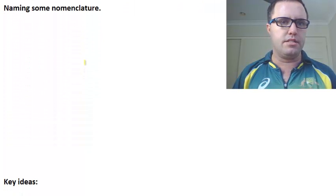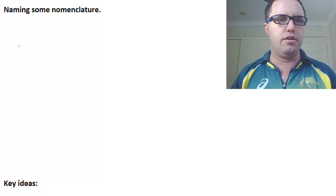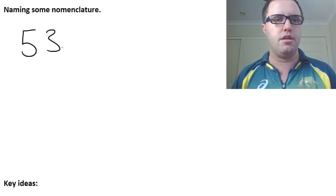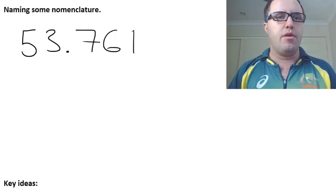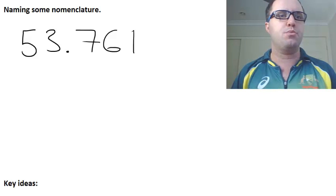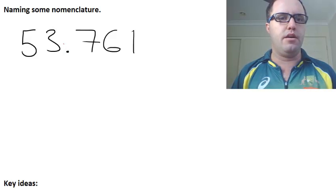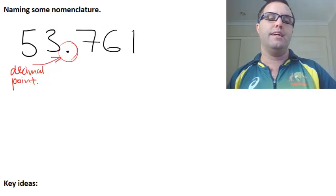Let's have a look at this, naming some nomenclature. So let's get our decimal numbers up, let's just make one up, 53.761. Now, when we're looking at this number here, I want you to remember that this thing here, and well it is called, this is our decimal point. Not decimal place, it's the decimal point.